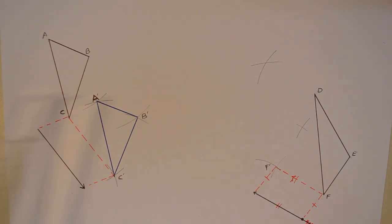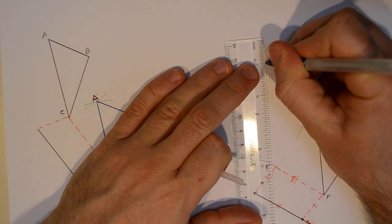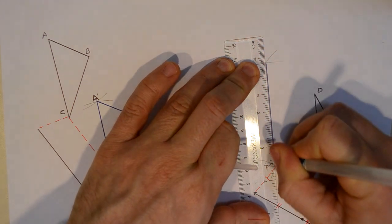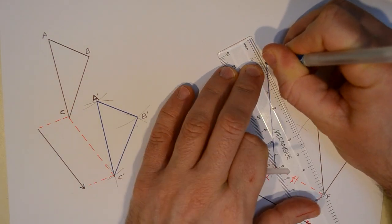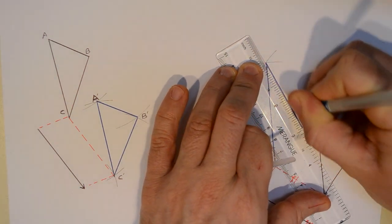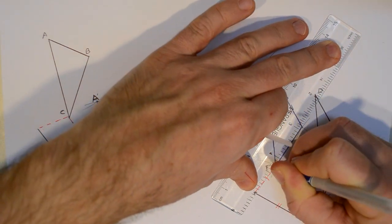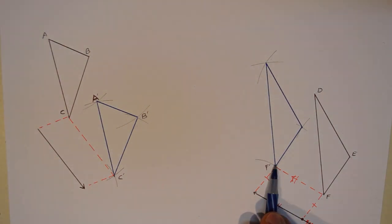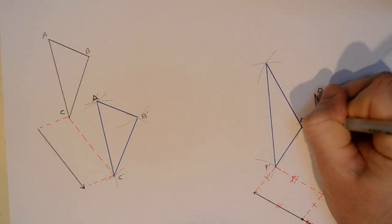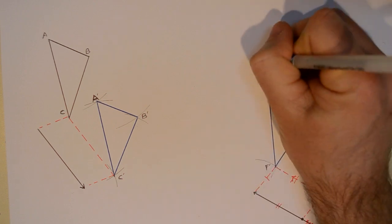Once again I can now go ahead and connect all the dots, and I'm now drawing in the final translated triangle. The construction part is over, I'm now just connecting dots, so that we can see the result of our construction. And there we have point F prime, that's of course E prime, and that of course would be D prime.